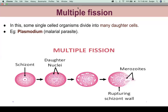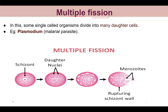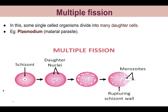Then comes multiple fission. In multiple fission, many daughter nuclei are formed. For example, Plasmodium — the malarial parasite — undergoes multiple fission. The organism develops many nuclei, forming a schizont layer. These elongate into a proper shape called merozoites. The schizont wall ruptures and releases the merozoites — so one organism produces many daughter cells.